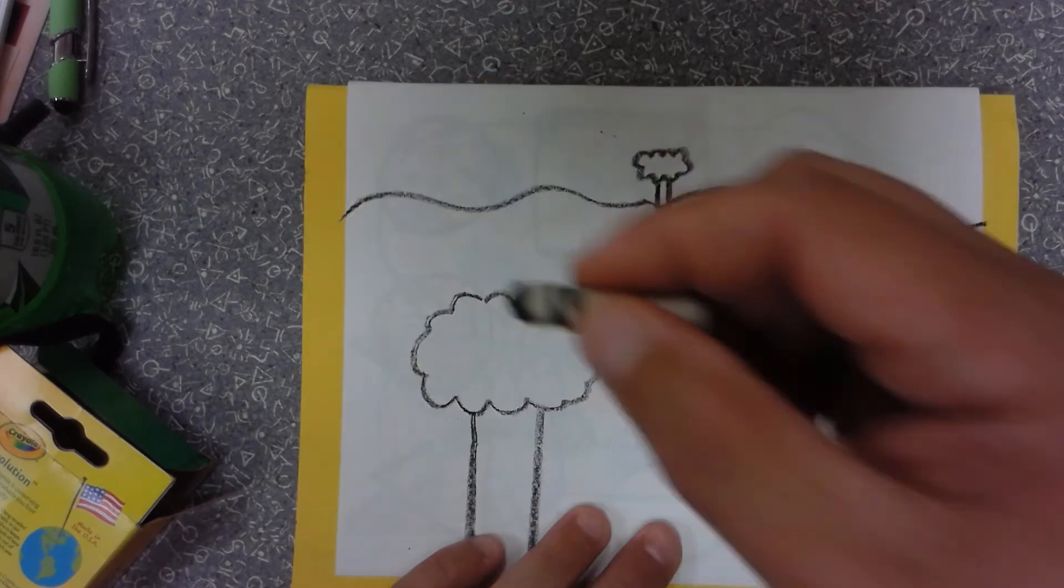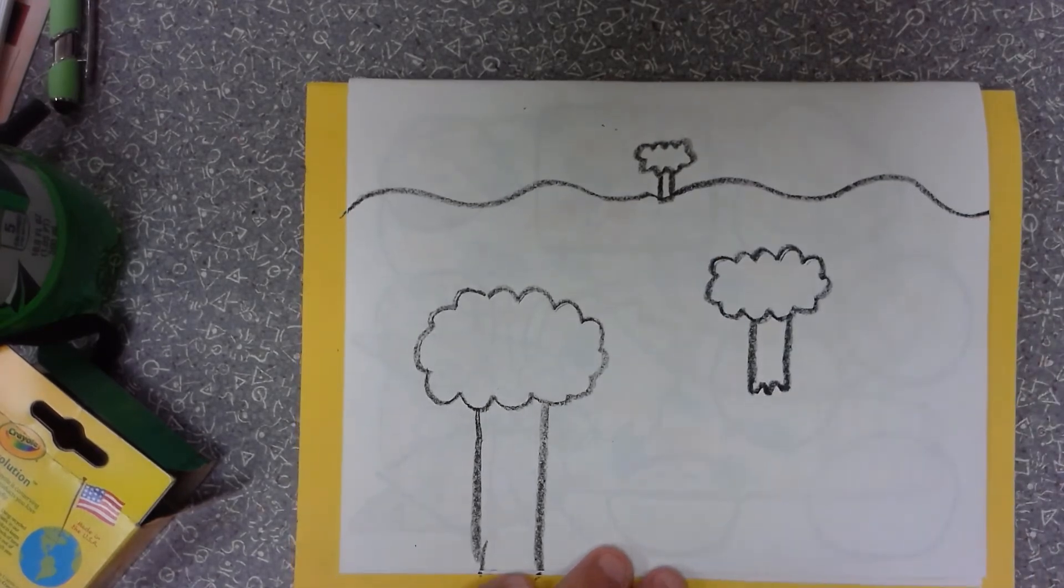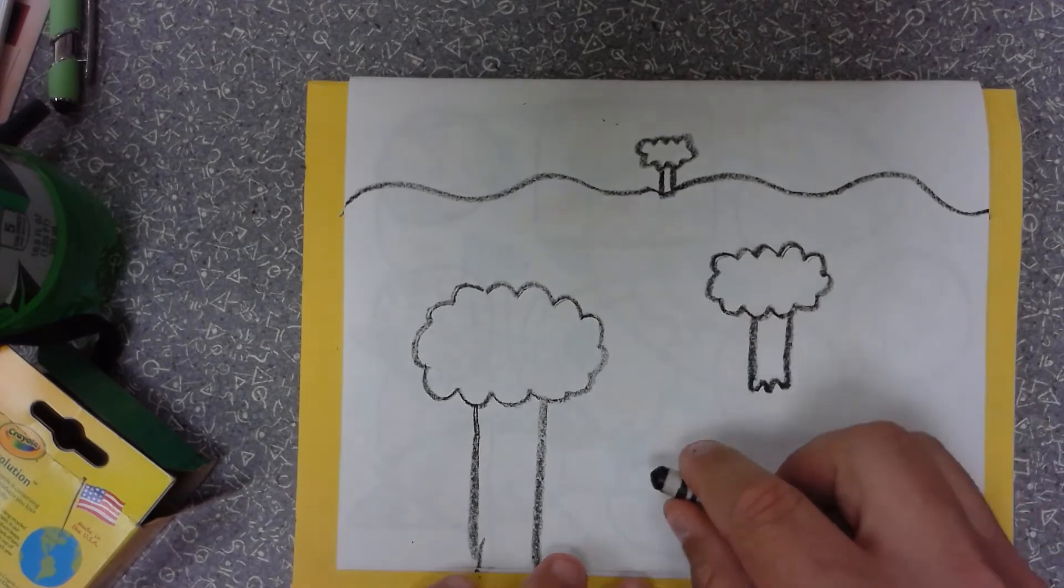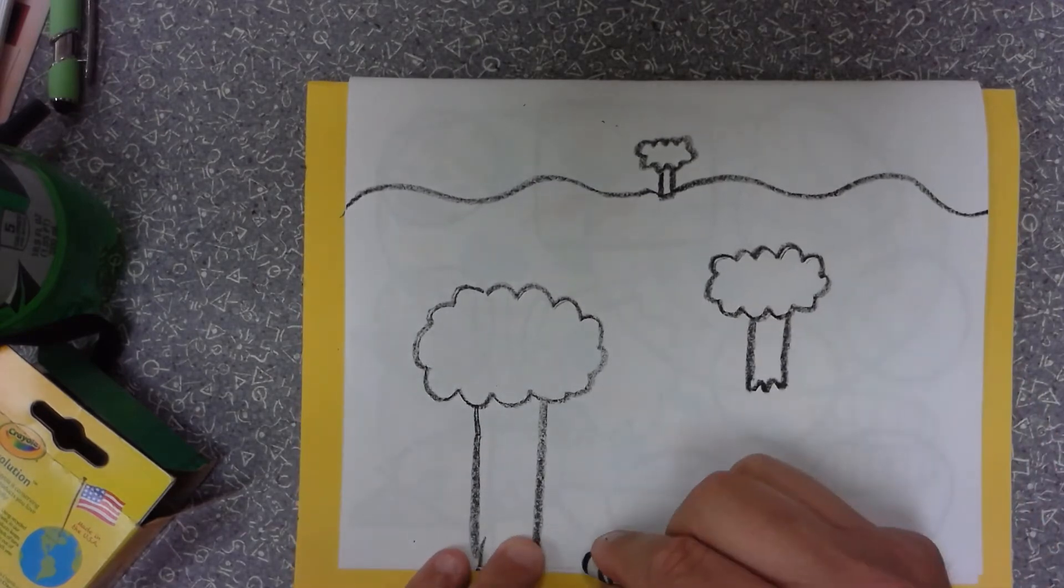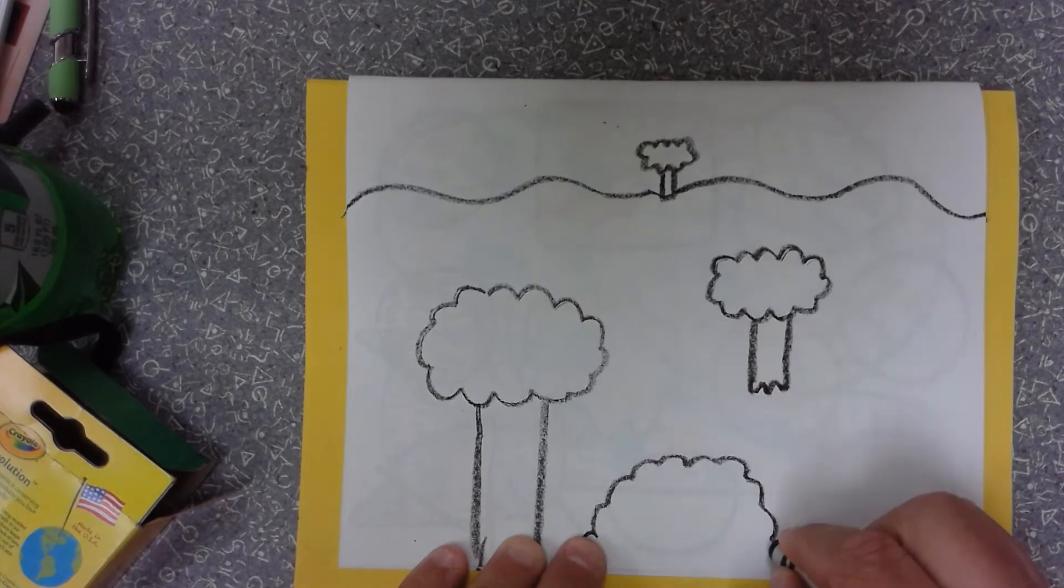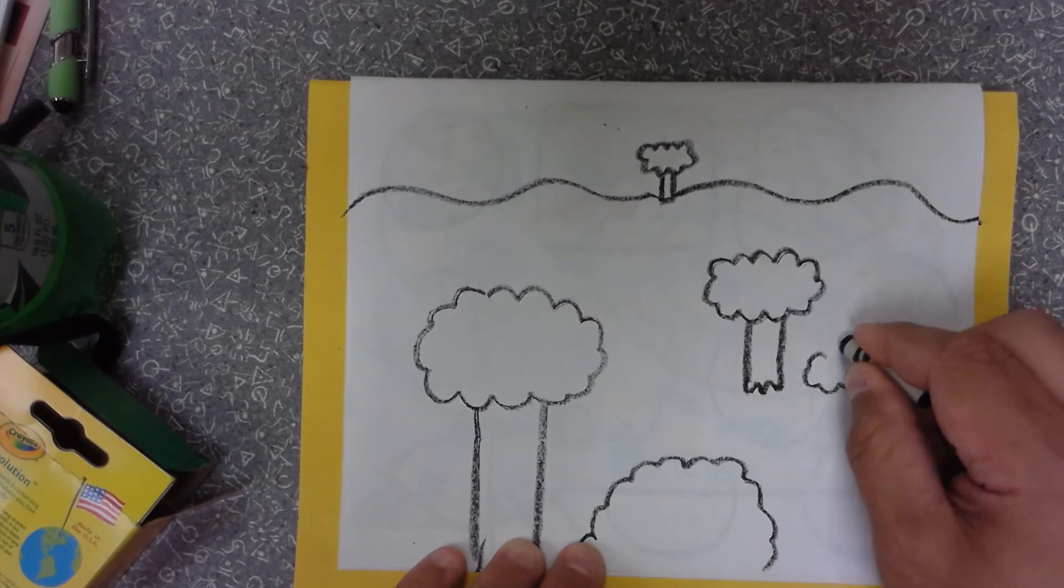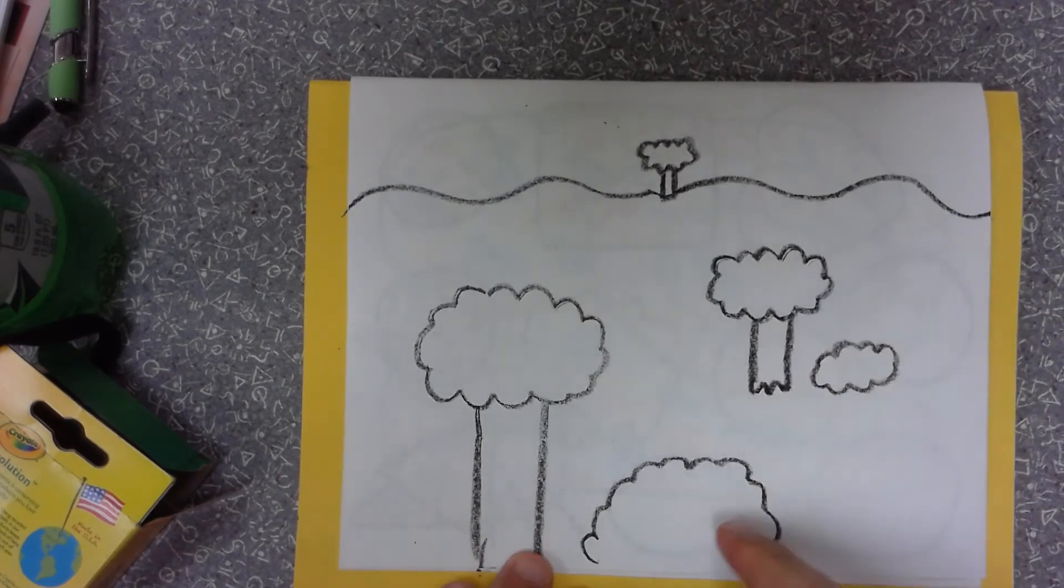Now I have my three trees and my horizon line. Anything I draw—if I want to draw it close to me it's bigger. If I drew a bush right here it would be a pretty big bush, but if I drew a bush next to this tree it wouldn't look as big because the tree next to it is bigger.